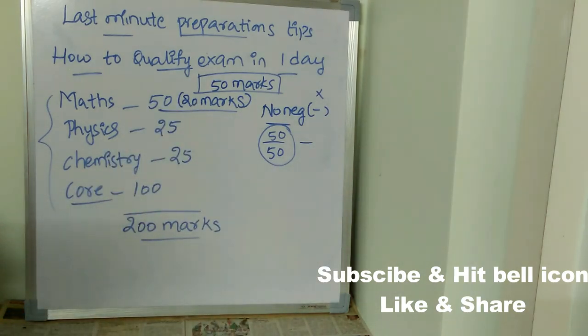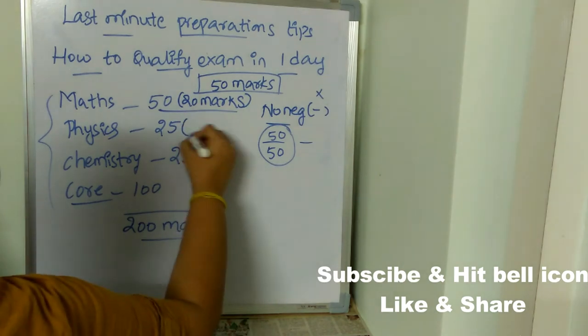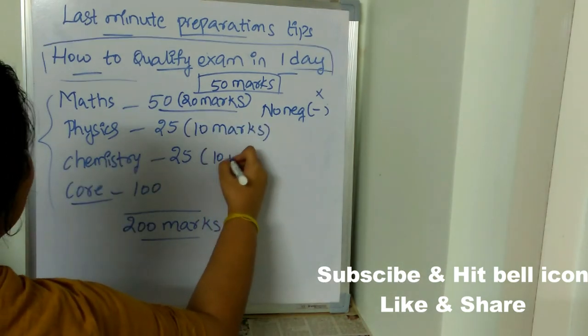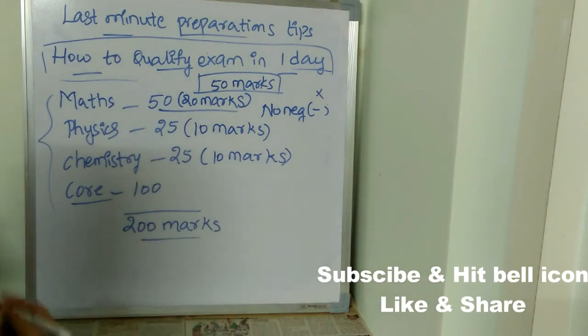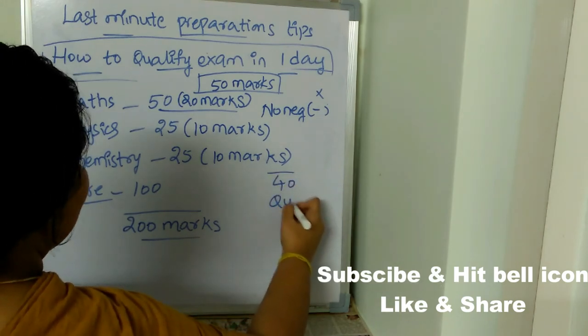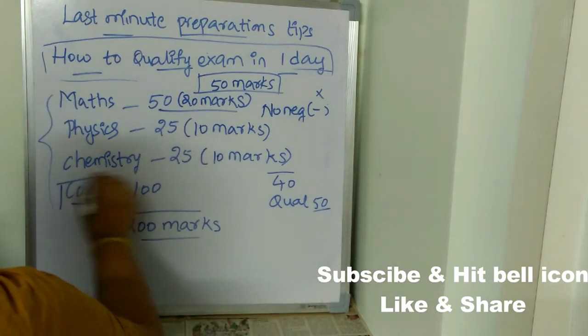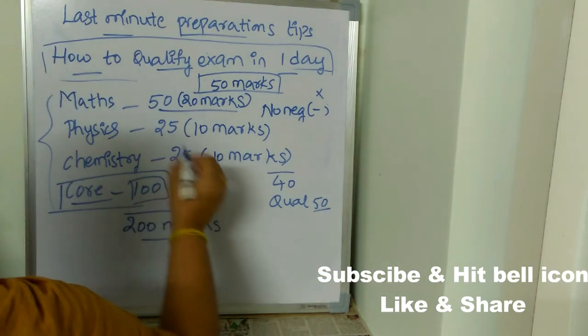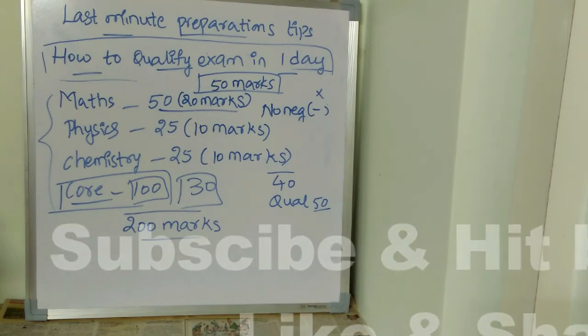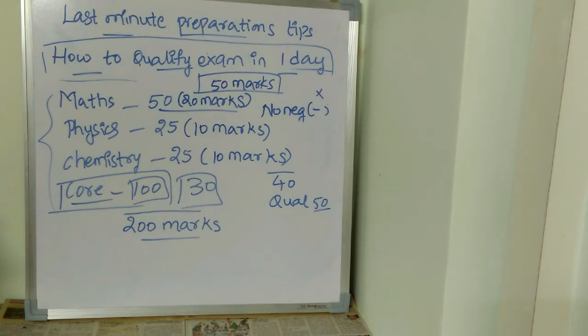Coming to physics, let's consider you get only 10 marks minimum. Coming to chemistry, let's think you got only 10 marks. So here 20 plus 10 already you got 40 and the qualifying marks is just 50. So in core subject out of 100, minimum you're going to get 30 marks because core is something which you have already read. And if you don't know any question, don't leave it. Attempt all the questions because there is no negative marking coming to ESET exam. Remember this technique and you can easily qualify ESET exam.